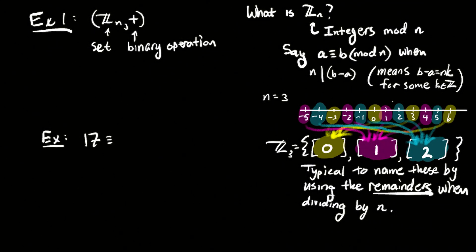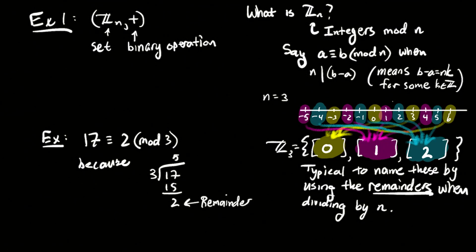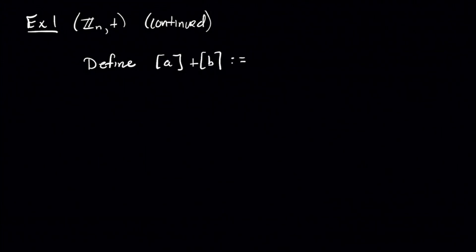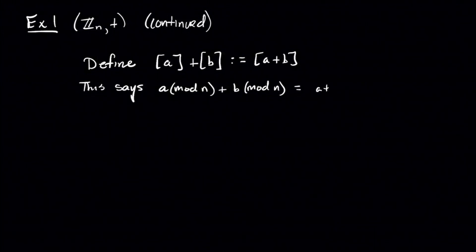To practice reducing something, say why is 17 equivalent to 2 mod 3? Just divide 17 by 3 and you see the remainder is 2, so 17 goes in the blue basket. We can add these equivalence classes — in other words, the baskets. The a basket plus the b basket gives you the basket that has a plus b. In other words, a mod n plus b mod n is just a plus b, then mod n.